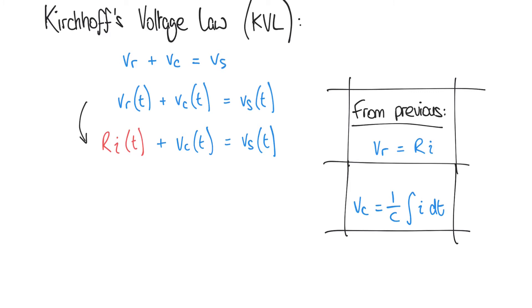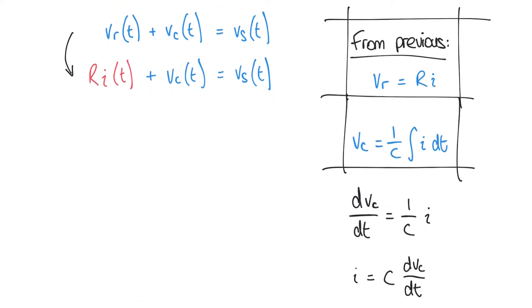If we differentiate both sides of the capacitor equation with respect to t, we get dVC/dt equals 1/C multiplied by I, because the differential of the integral of I is just I — the differential and the integral cancel one another out. We can rearrange this expression to I equals C multiplied by dVC/dt.